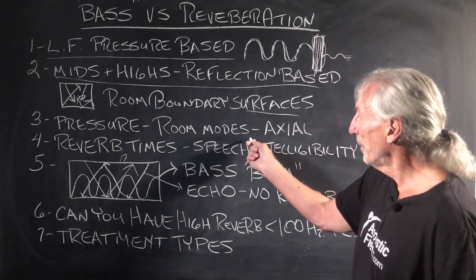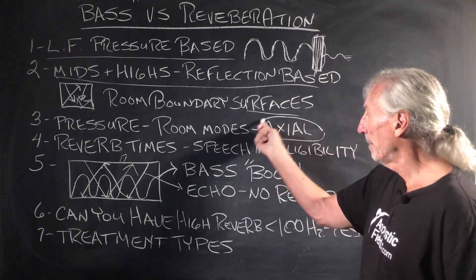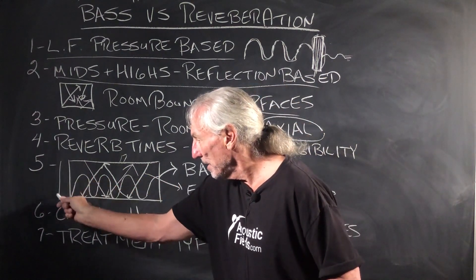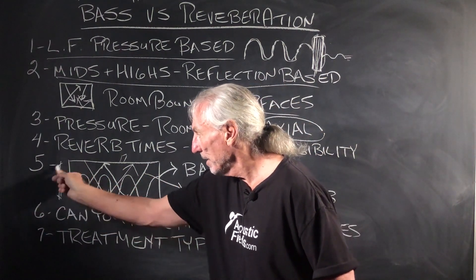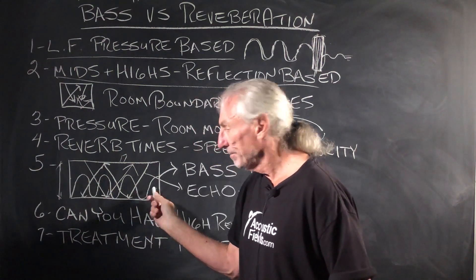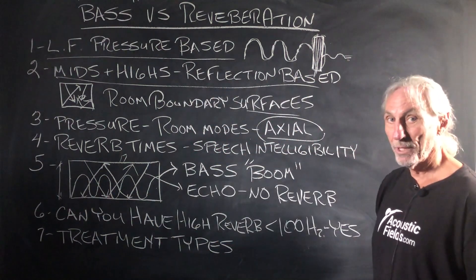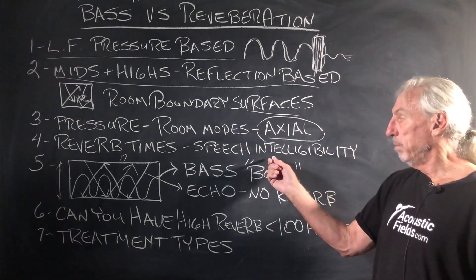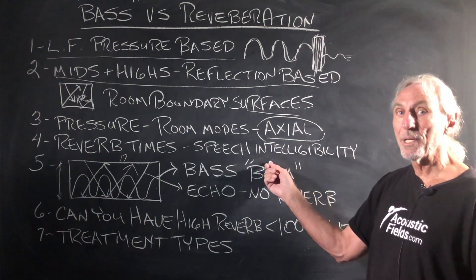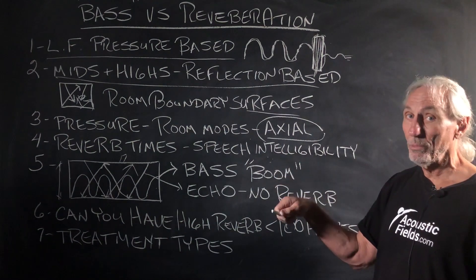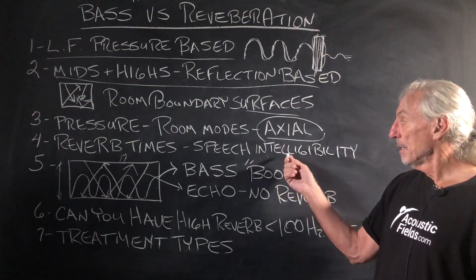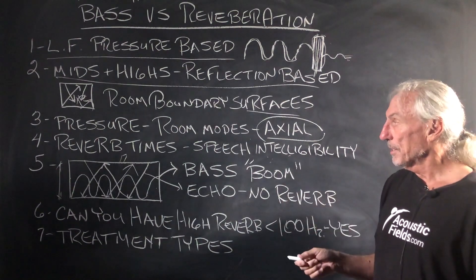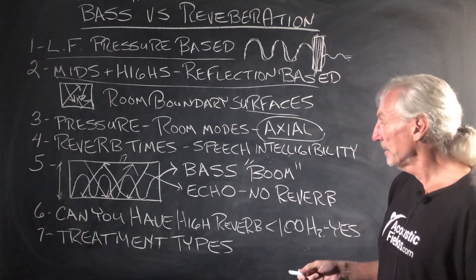Pressure, room modes, axial — our biggest ones are between two parallel surfaces: floor to ceiling, sidewall to sidewall, front to rear. Reverberation times are mainly a middle and high frequency thing, although we can have it in low frequencies. But for purposes of illustration and teaching, let's stick with mids and highs to define it.